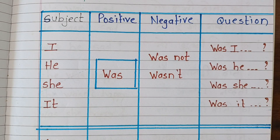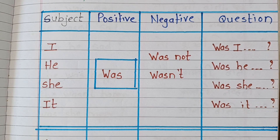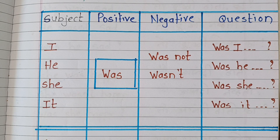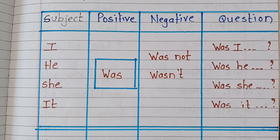Let's start with the chart. This chart shows which subject uses 'was' and which subject uses 'were'. In the chart we can use the positive sentence, negative sentence, or question — which is the format. We can use this chart to understand the 'was' and 'were' concept.